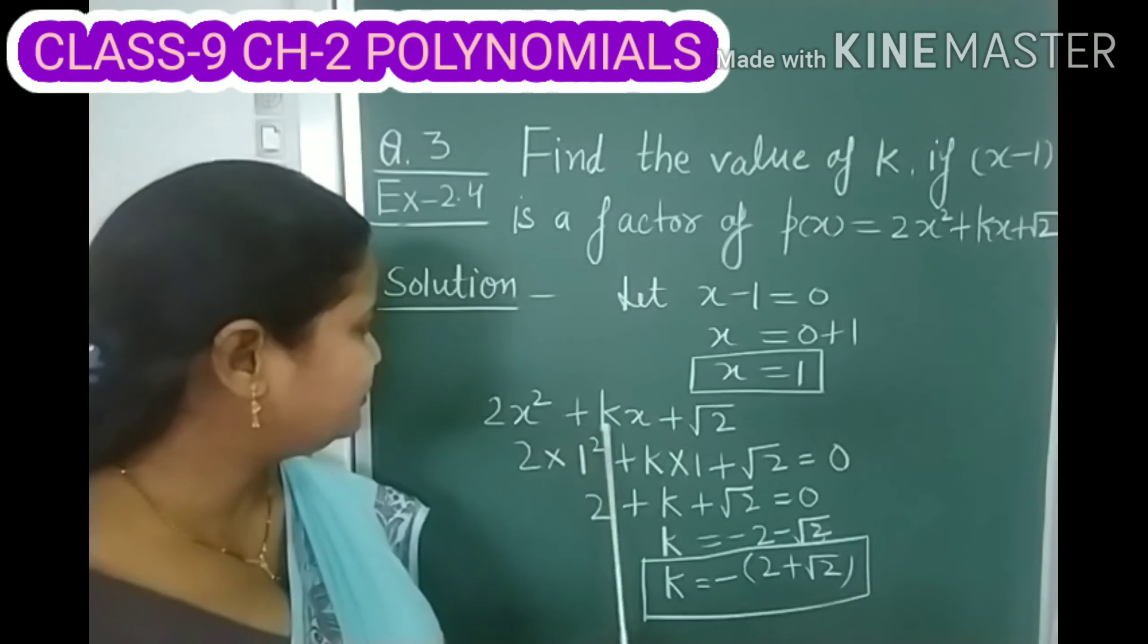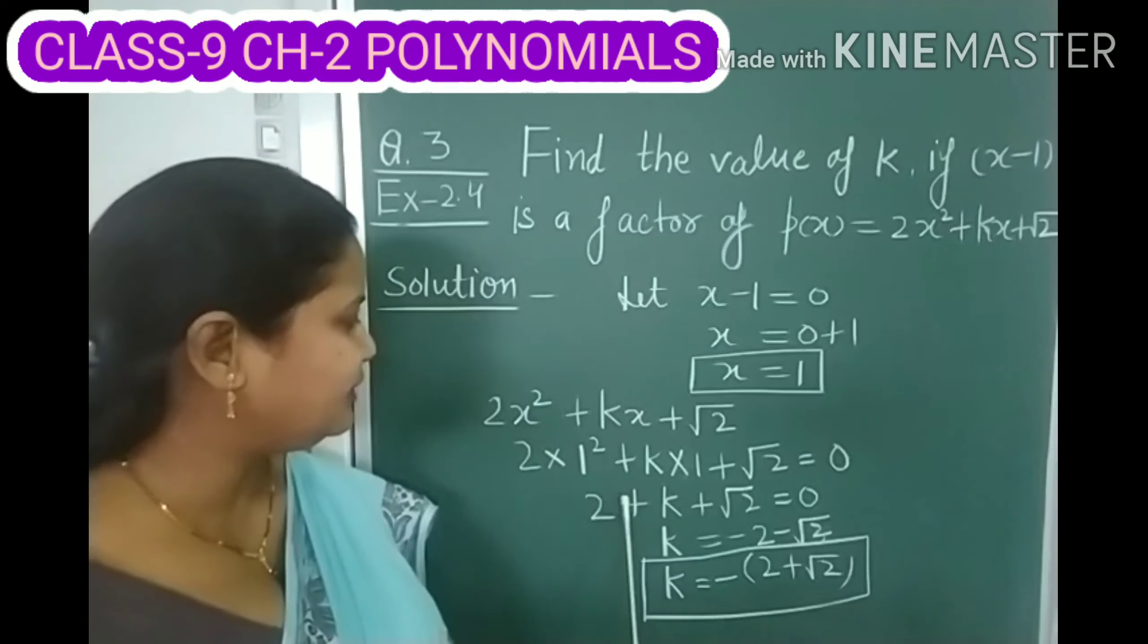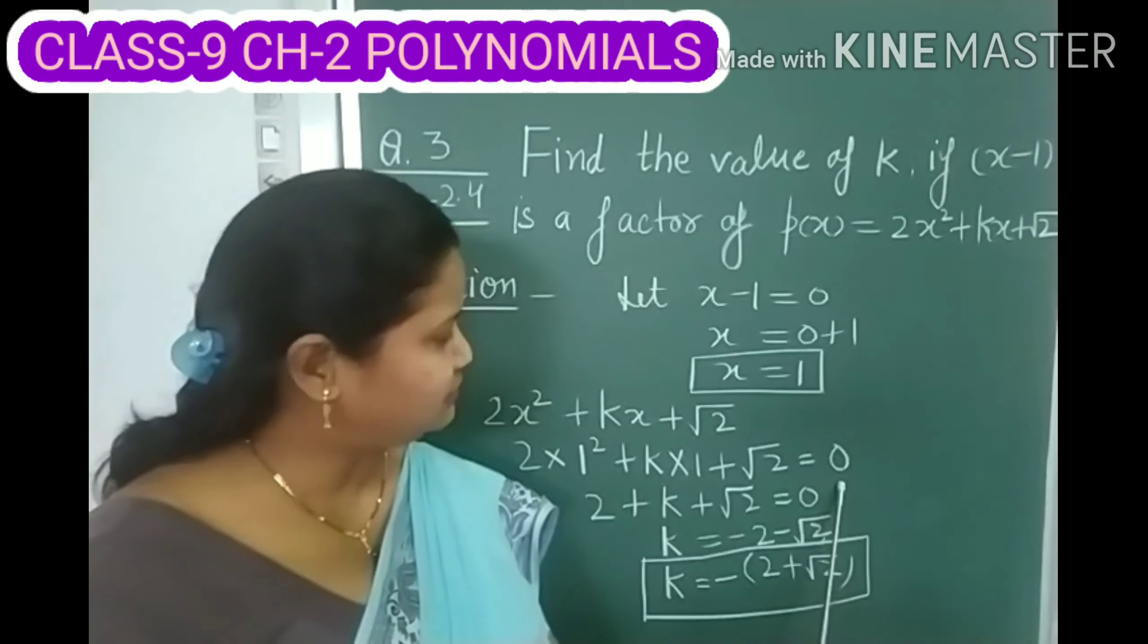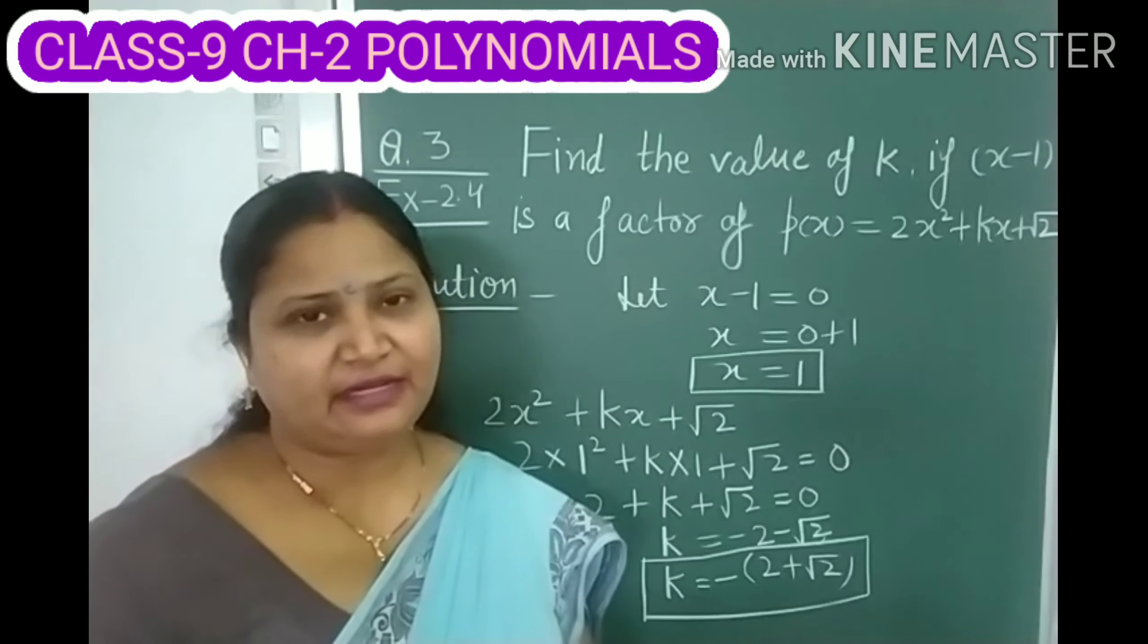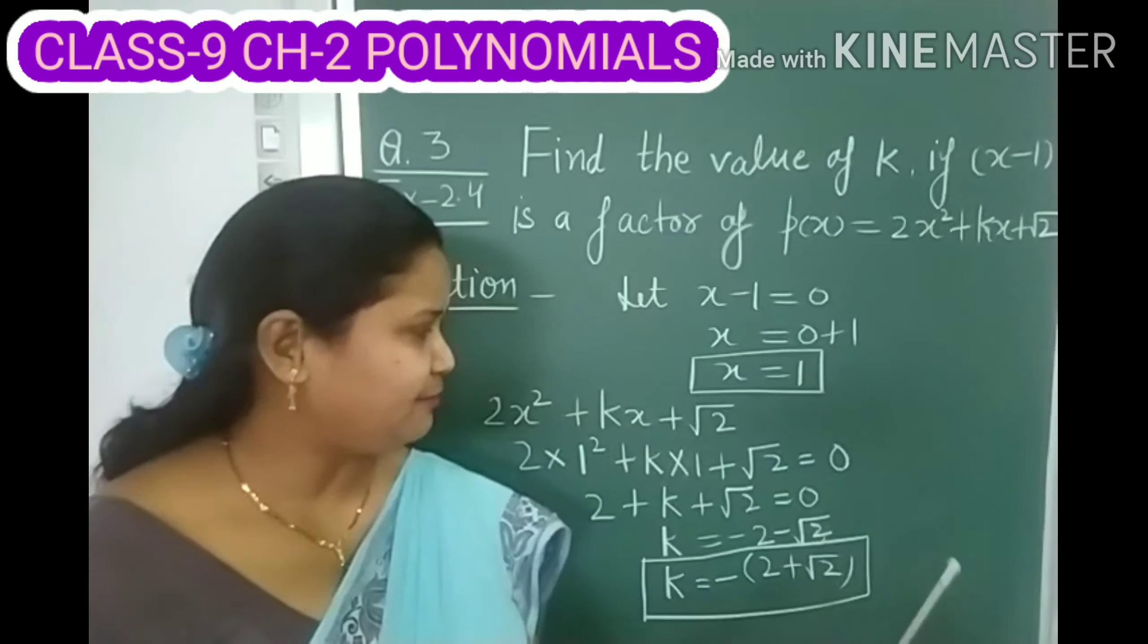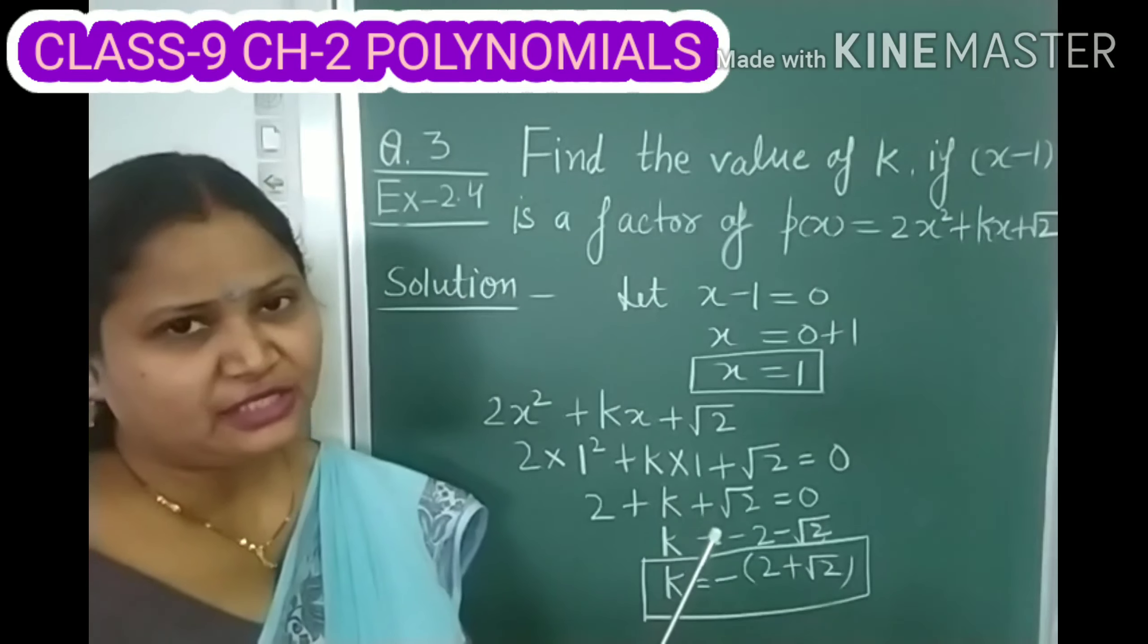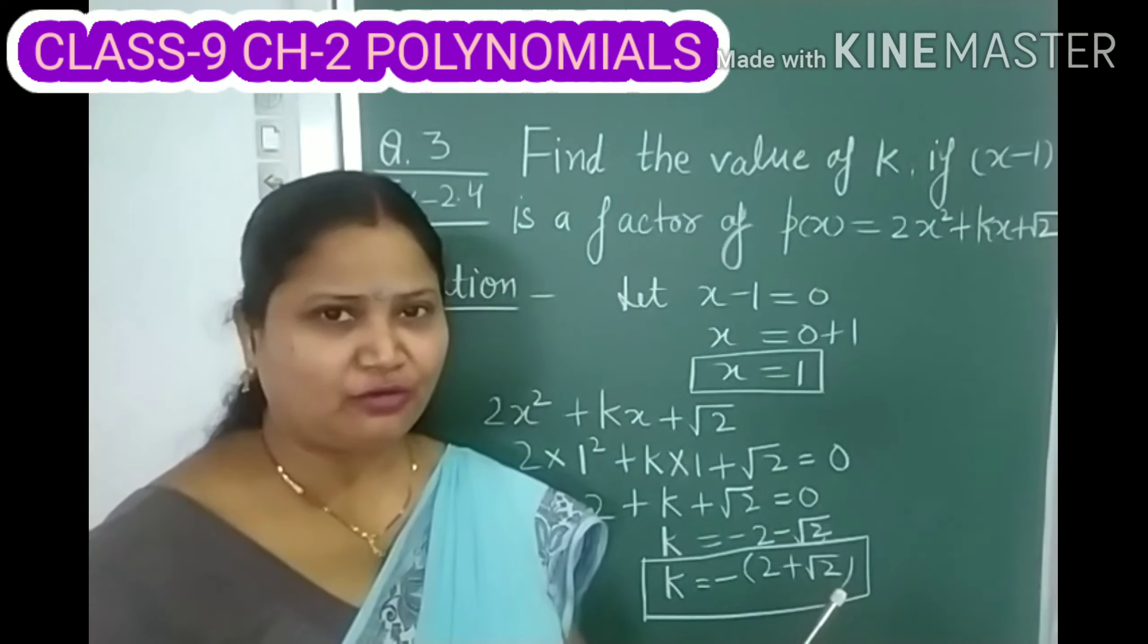If we substitute 1 in place of X here, then we can keep this polynomial equal to 0. In this way, we find an equation in terms of K. We can solve this equation and then we can find the value of K.